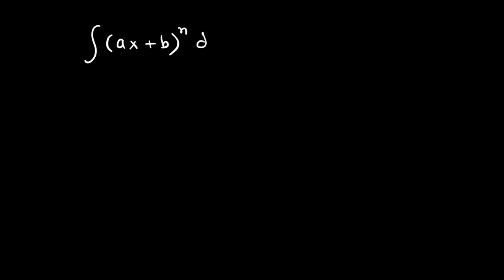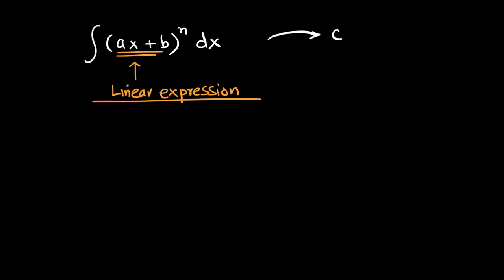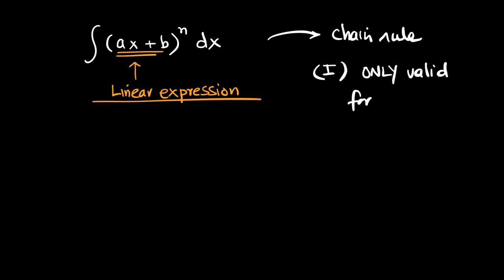What if there is another rule that will do the working a bit faster? If we want to integrate (ax + b)ⁿ dx, this is known as the chain rule. There is a linear expression inside the bracket. Keep in mind, the chain rule is only valid for a linear expression — that is the first limitation.